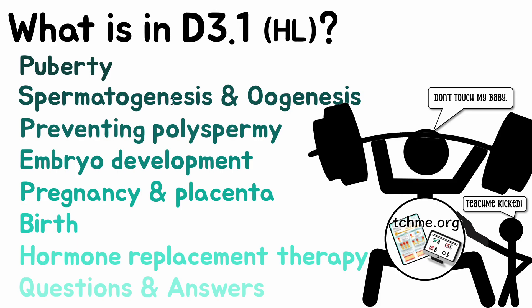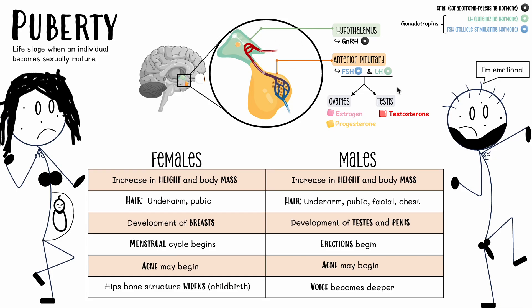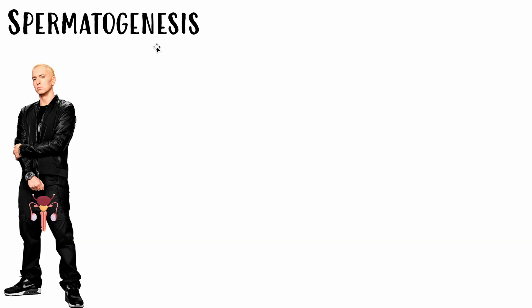Next, we're going to be talking about spermatogenesis. During puberty, one of the key changes that happens in males is development of the testes — the testes will increase in size and start to function properly by making sperm cells. So during puberty, males are now able to start making sperm cells, which means they can do sexual reproduction and have a baby. The process of making sperm is called spermatogenesis — the process of forming mature sperm, or spermatozoa.